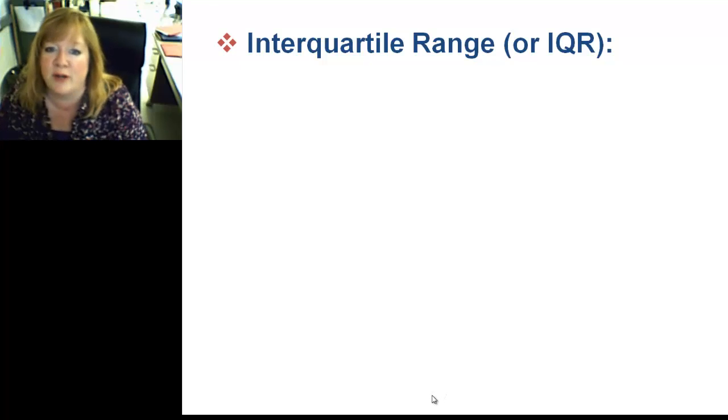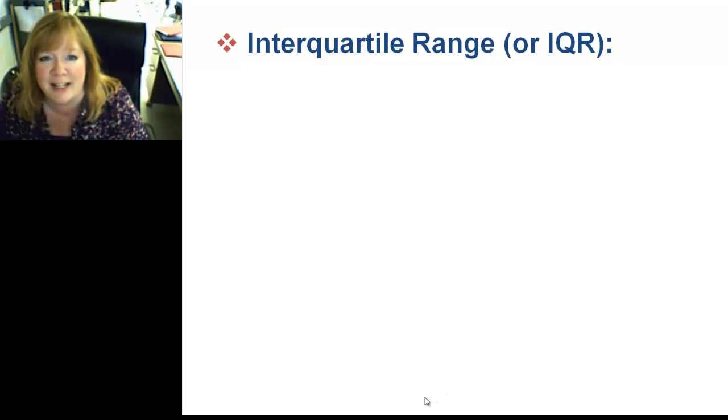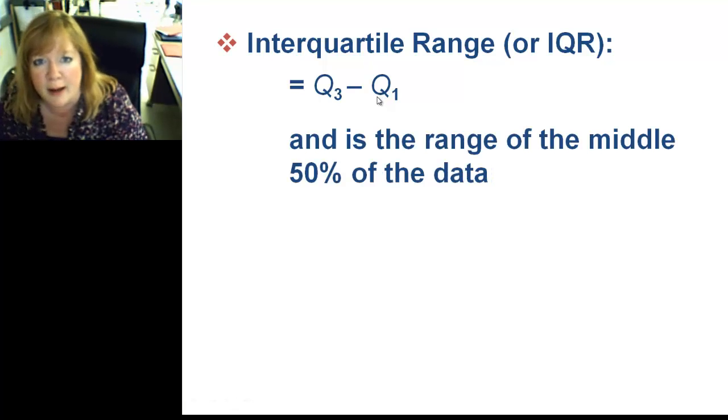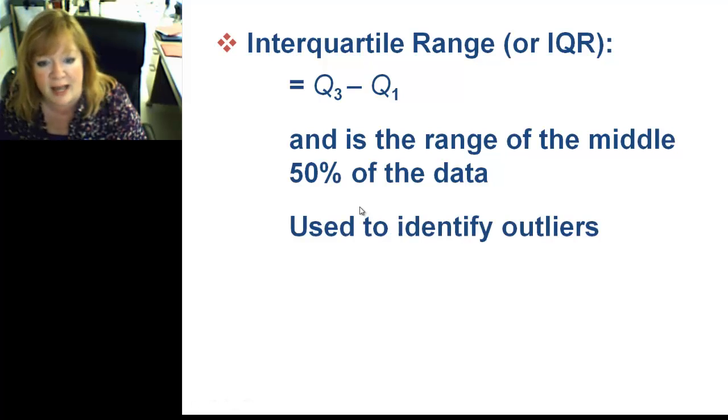All right, let's talk about interquartile range. Doesn't this sound like we're speaking rocket science? Find your quartile, decile, percentile, and interquartile range. Okay, the way they abbreviate interquartile range is IQR. And, all that is is the difference from Q3 to Q1. Now, interquartile range is going to be important for finding outliers. It's the range of the middle 50% of the data. So, 50% of the data that falls in the middle around the mean is in the interquartile range. And, it's used to identify outliers, like I said. So, it is important.